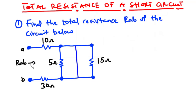Using the current distribution approach to confirm: a voltage source drives current through the 10-ohm resistor to a node. Instead of dividing into the 5-ohm and 15-ohm branches, the current flows through the low-resistance wire path, ignoring those resistors. The current sees high resistance in both the 5-ohm and 15-ohm branches, so it chooses the low-resistance path. Clearly, no current flows through the 5-ohm or 15-ohm resistors, confirming both are short-circuited.